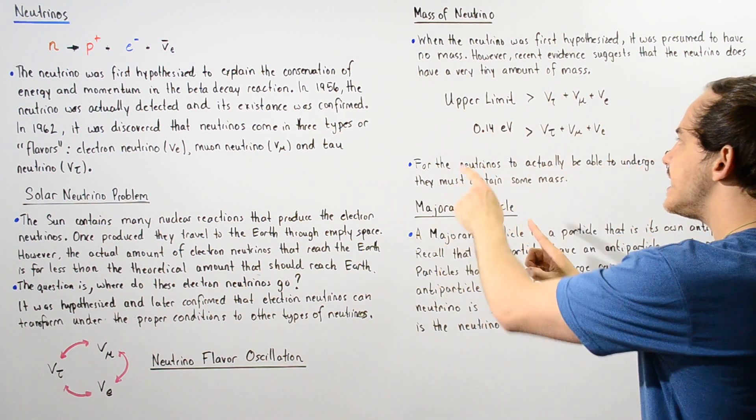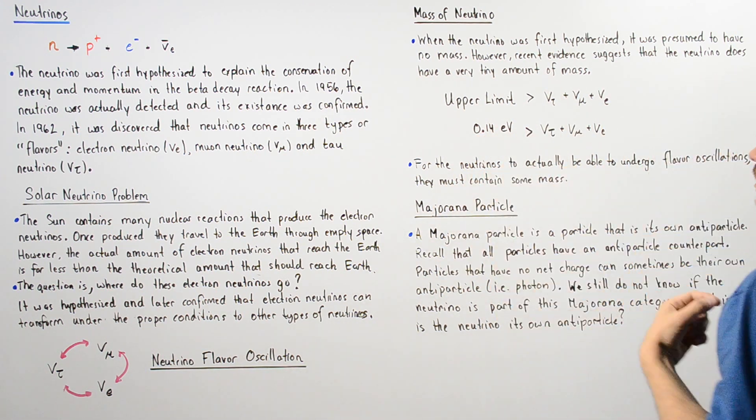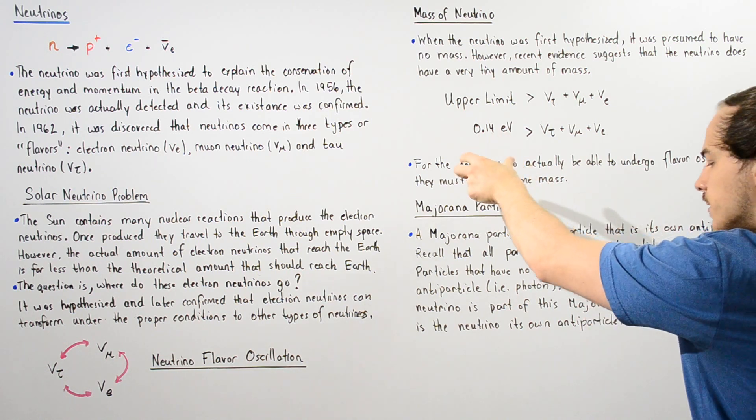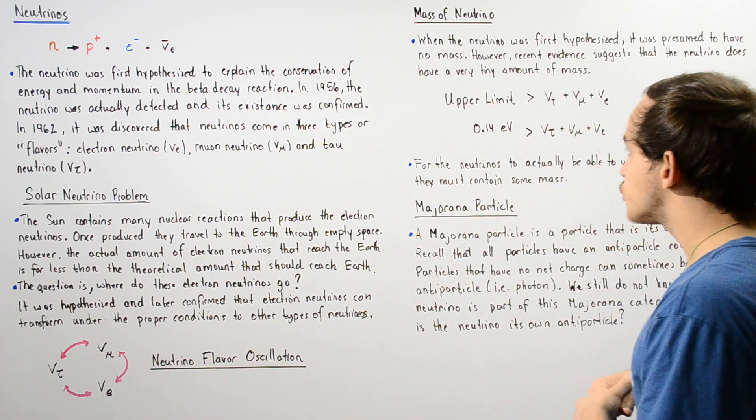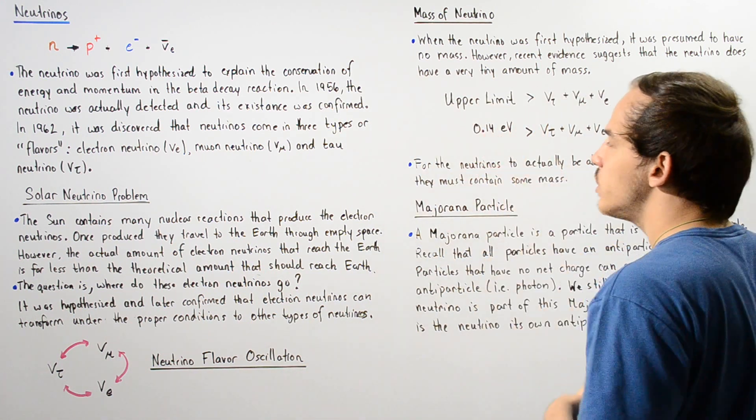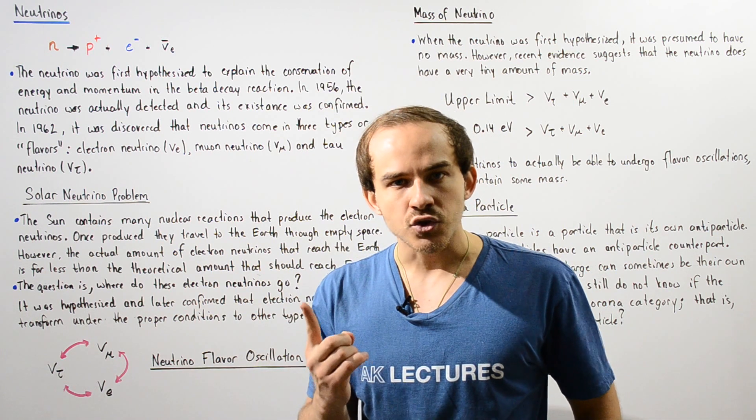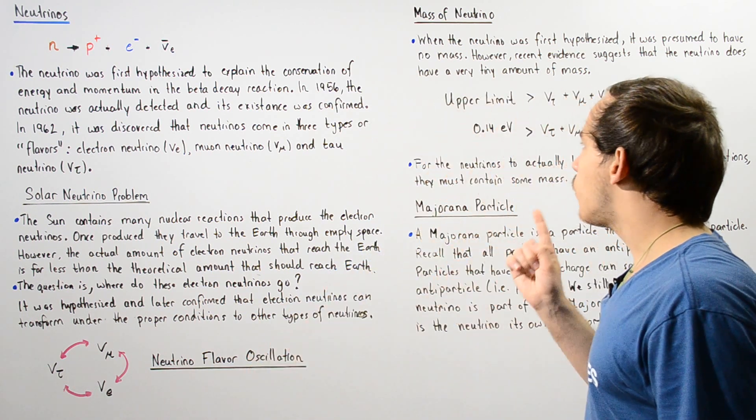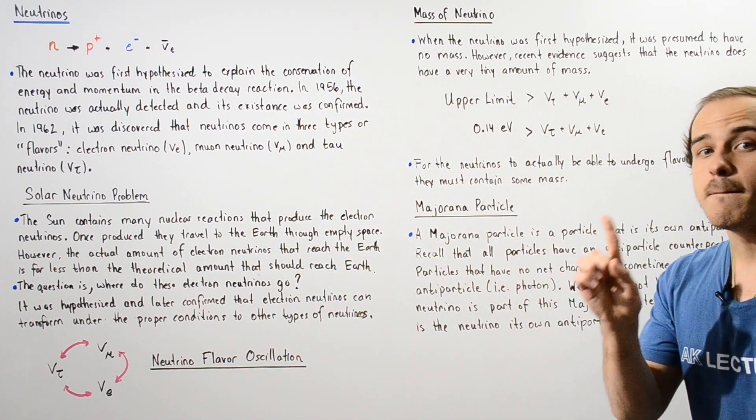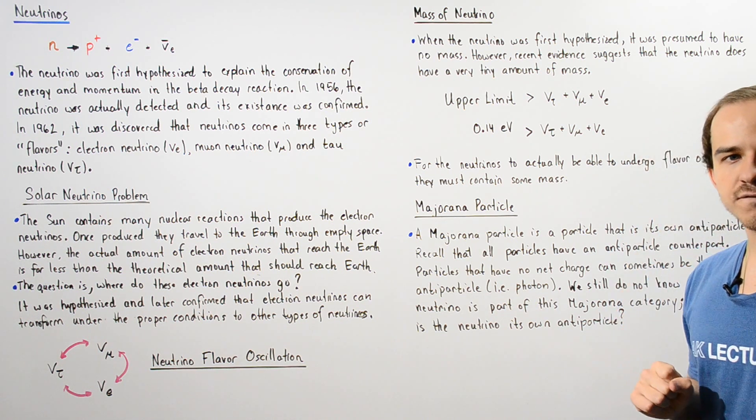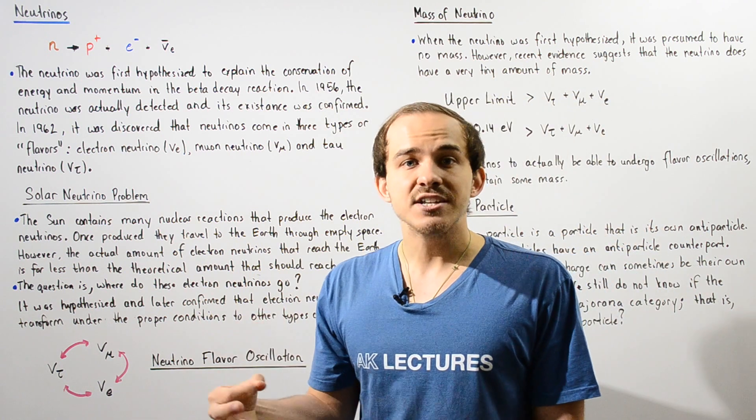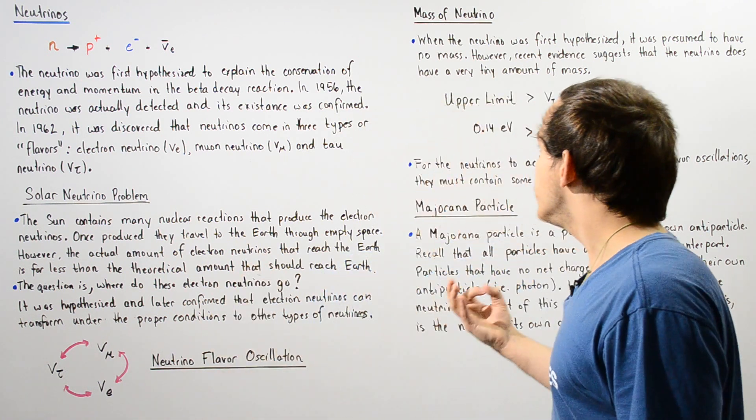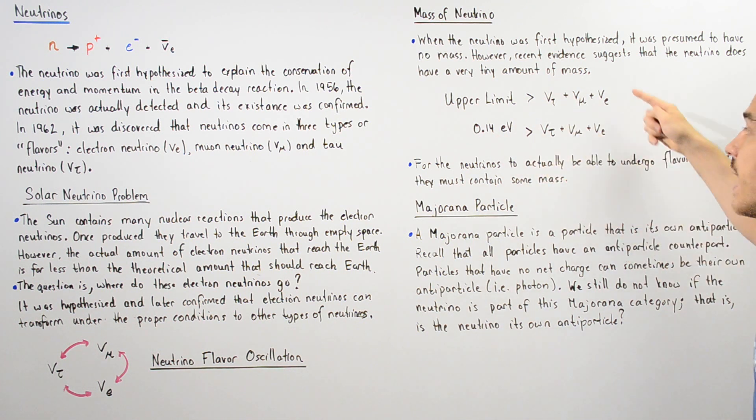Now, to compare to the mass of something that's also small, let's compare to the mass of our electron. One electron has a mass of 0.511 mega electron volts. So that means the electron has a mass that is much greater than the sum of the masses of these three neutrinos.